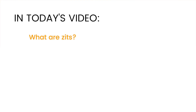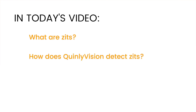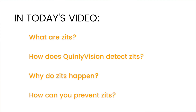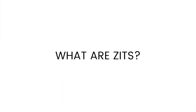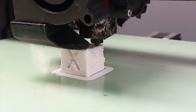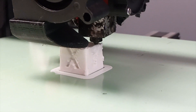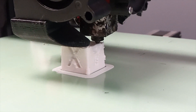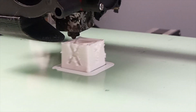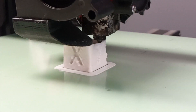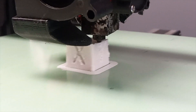Today I'll talk about what zits are, how Quinly Vision detects them, why zits happen, and how you can prevent them from happening on your 3D prints. So what are zits? Zits are little blobs or dots on the surface of your print, and they can be randomly distributed across the surface, or they can be following some kind of pattern.